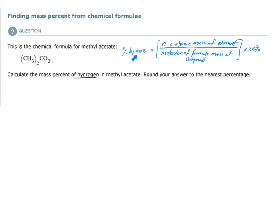So the percent by mass of an element is equal to n, where n is the number of atoms of the element in the molecule or compound, times the atomic mass of that element, divided by the molecular or formula mass of the compound. Now let's plug in the information we have to find the percent by mass of hydrogen in methyl acetate.